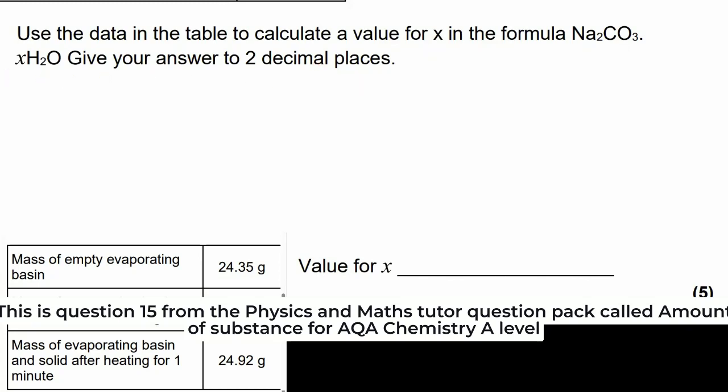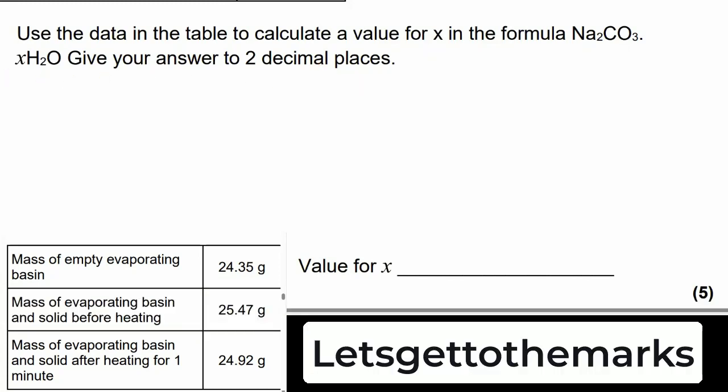Use the data in the table to calculate a value for x in the formula Na2CO3·xH2O. Give your answer to two decimal places.